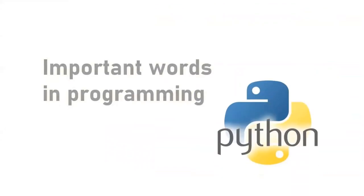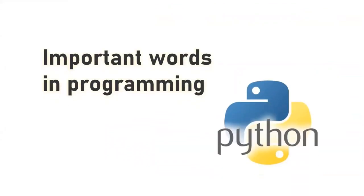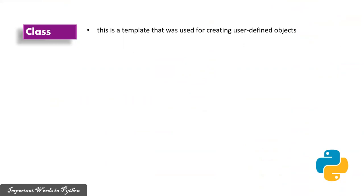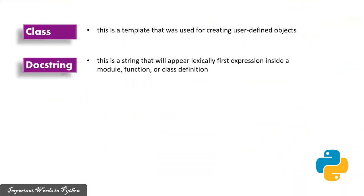Let's learn important words in programming, particularly the Python programming. Class: It is a template that was used for creating user-defined objects. Docstring: This is a string that will appear lexically first expression inside a module, function, or class definition. The object will be available to documentation tools.